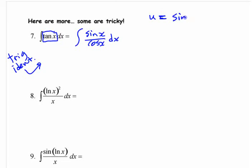If you make u into sine x, you're left with 1 over cos x, and that's not going to be the derivative of sine x, right? So it has to be negative.